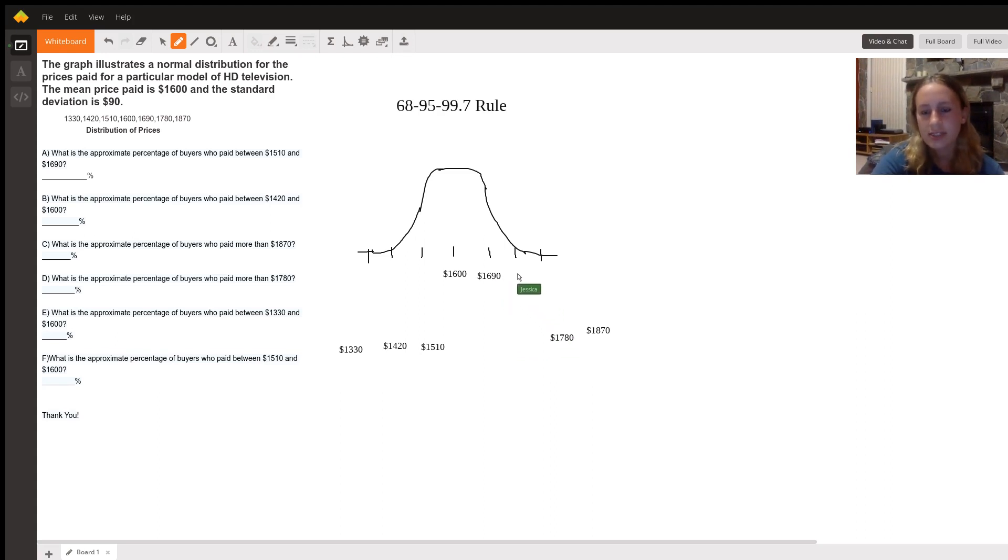Two standard deviations above is just $1,780 plus $1,780, which is $1,870. Let's do the other half of the graph.